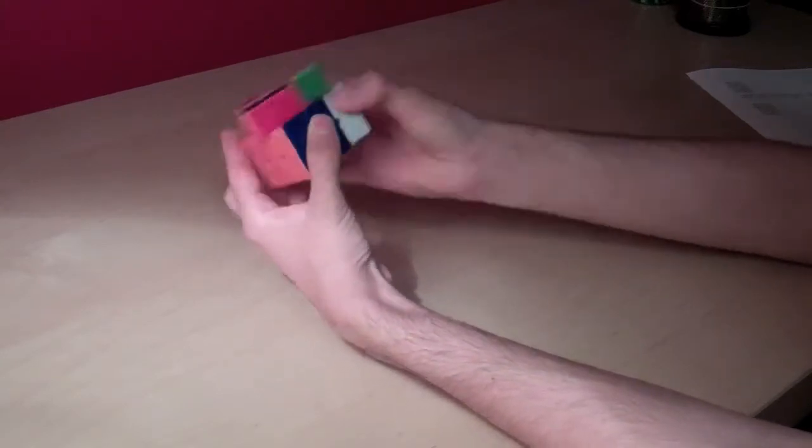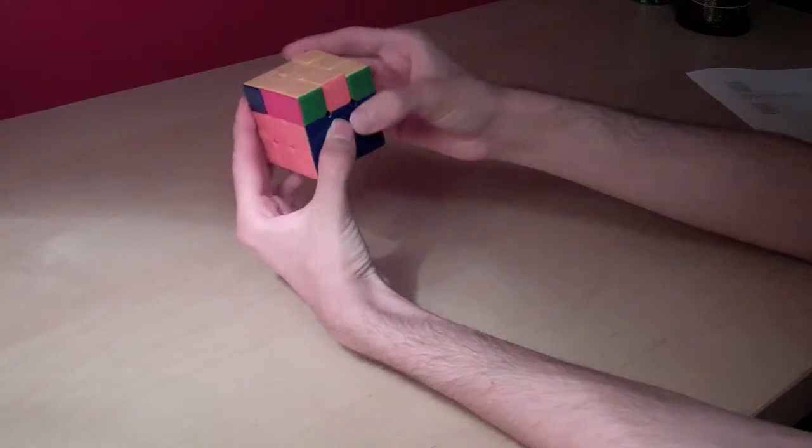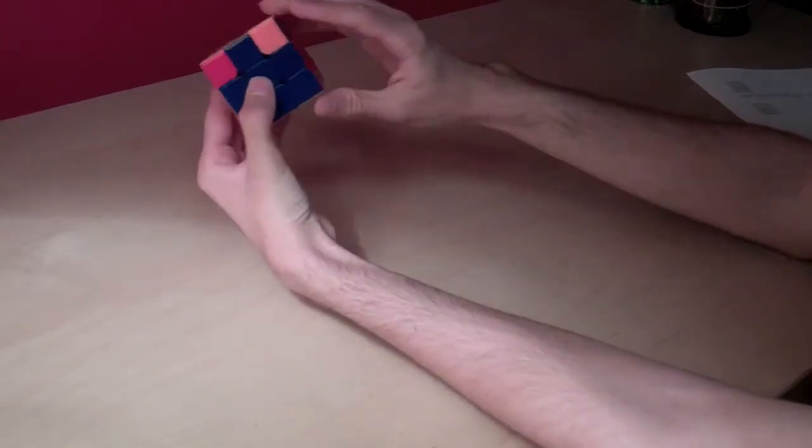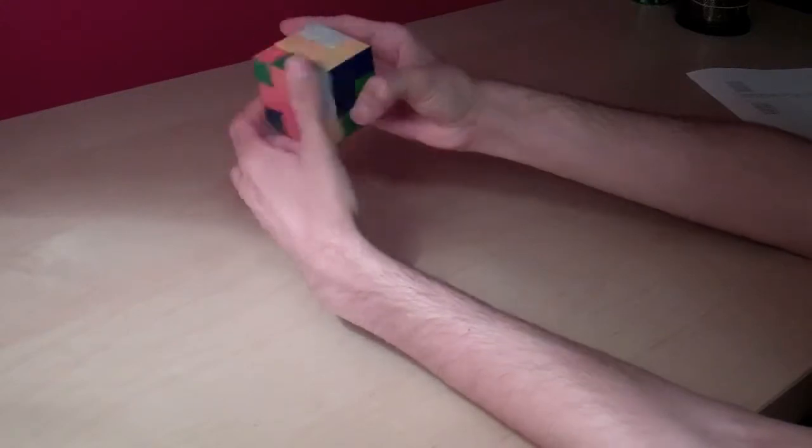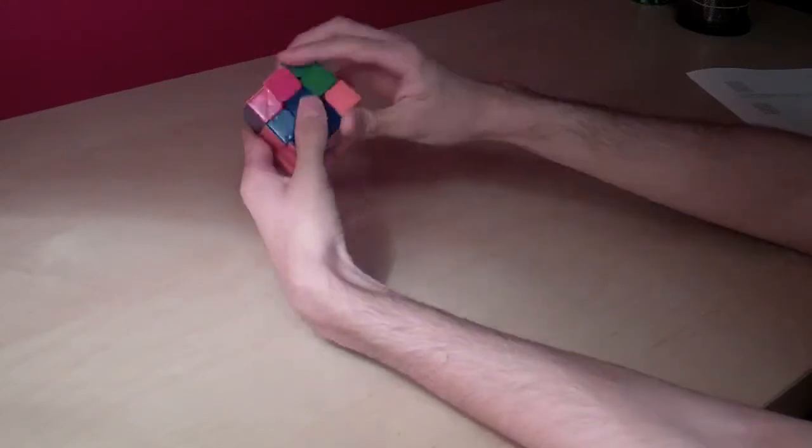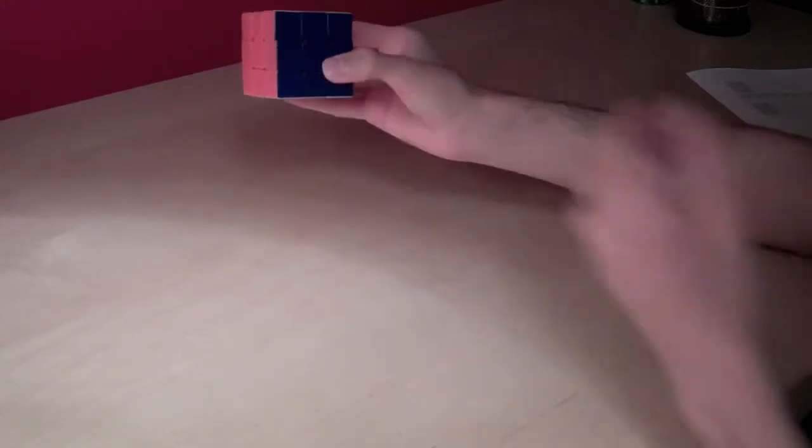And now I'll do OLL, COLL, like that. And this is a cuboid-friendly R perm. And like that.